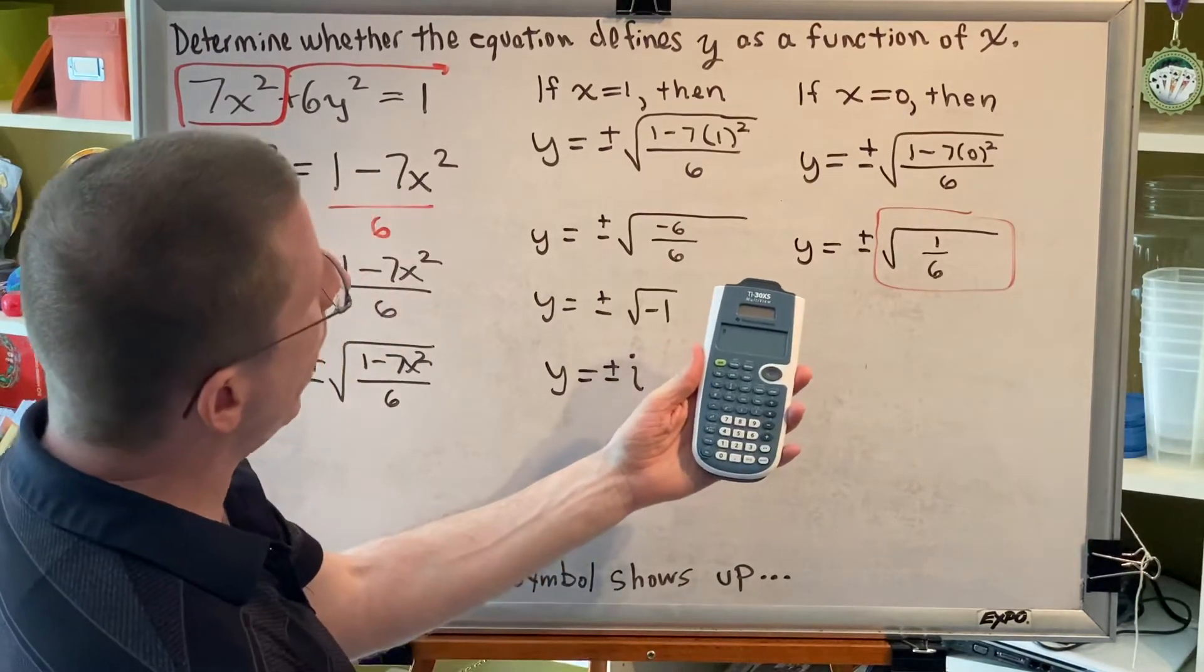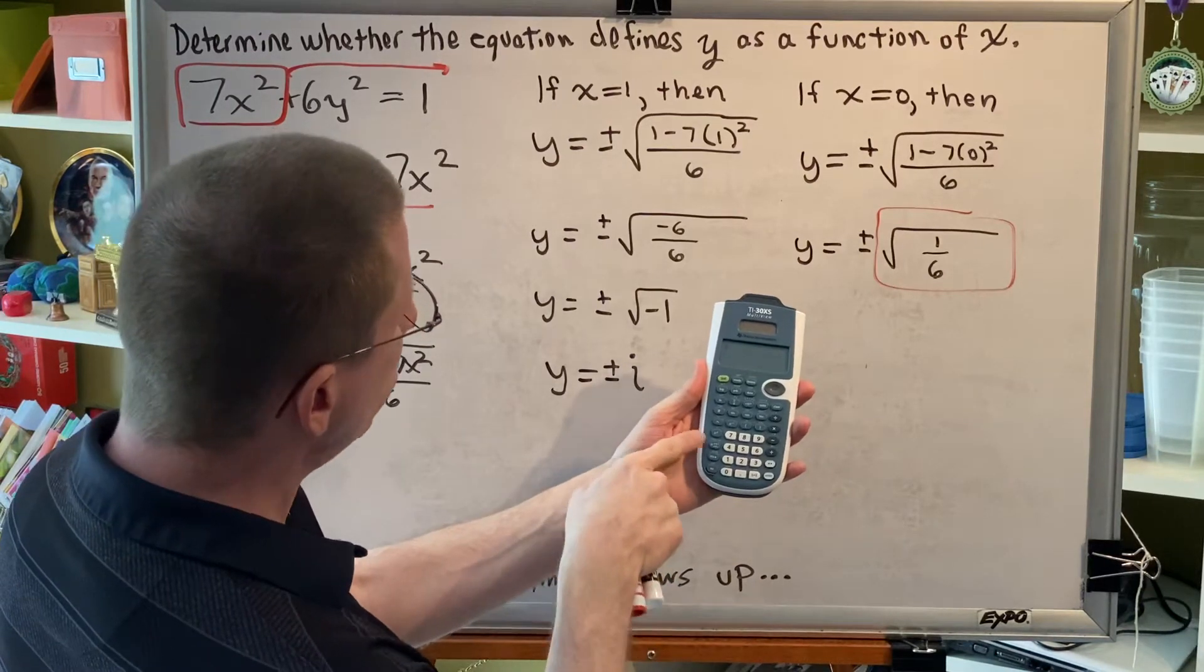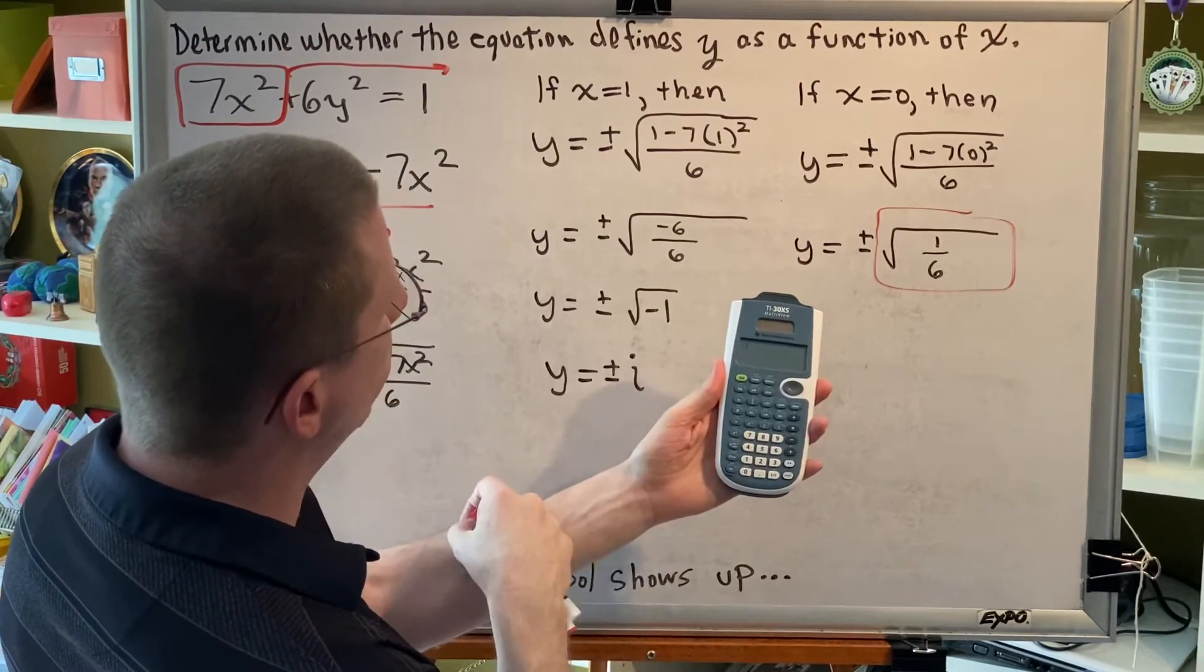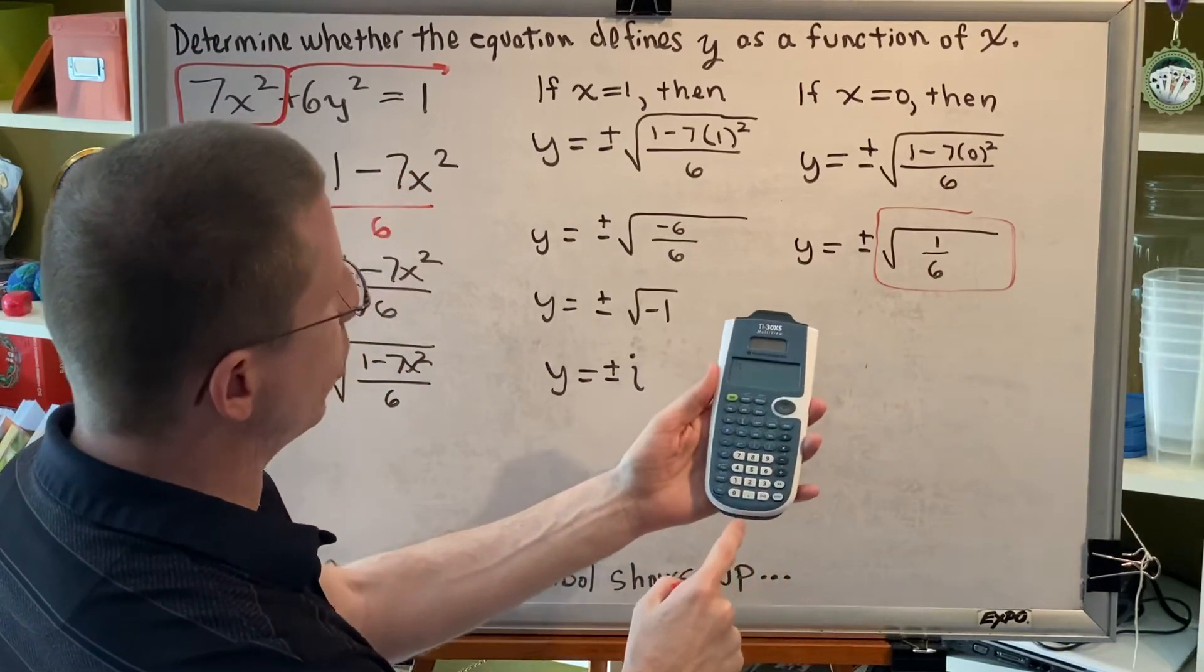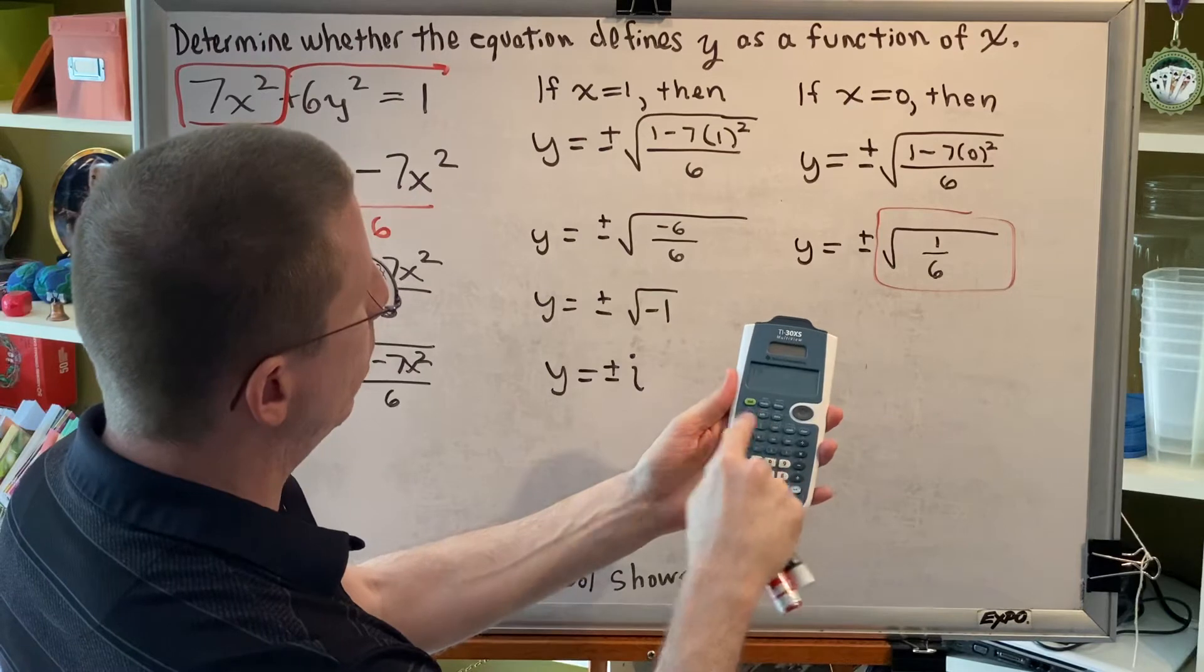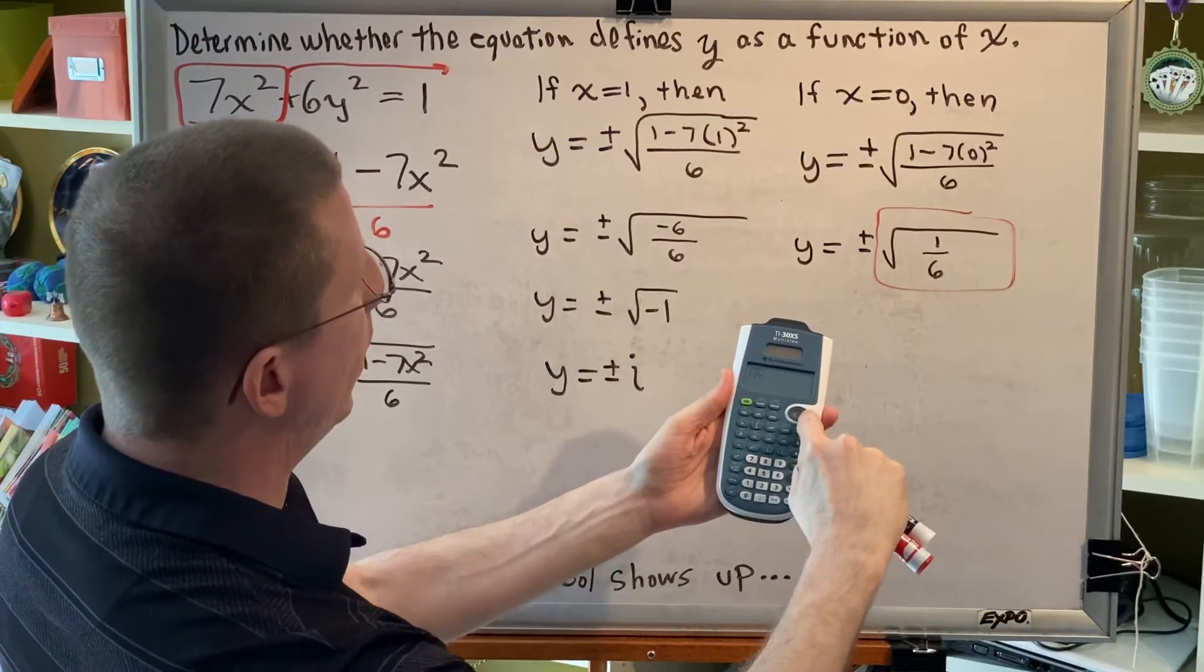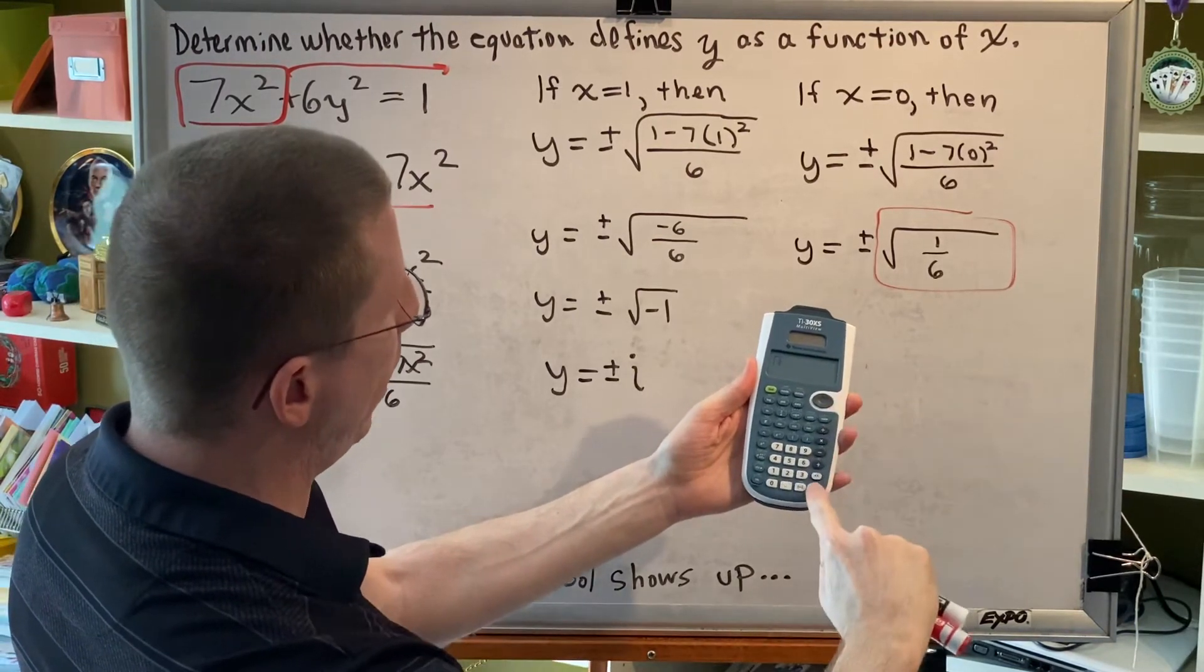I'm using the TI 30XS multi-view calculator. The first button I'm going to hit is the square root button. The square root button is in green above the x² button. So, I hit the green second button, which is a shifting button, and then the x² key. Then, I'm going to enter my 1/6. 1/6 happens to be a fraction, and this multi-view calculator can draw fractions. Hit the button n over d. Then, at the top of the fraction, put a 1 for the numerator, and at the bottom of the fraction, put a 6 for the denominator. Hit the right arrow to get outside of the fraction, hit the right arrow again to get outside of the radical, and hit enter.